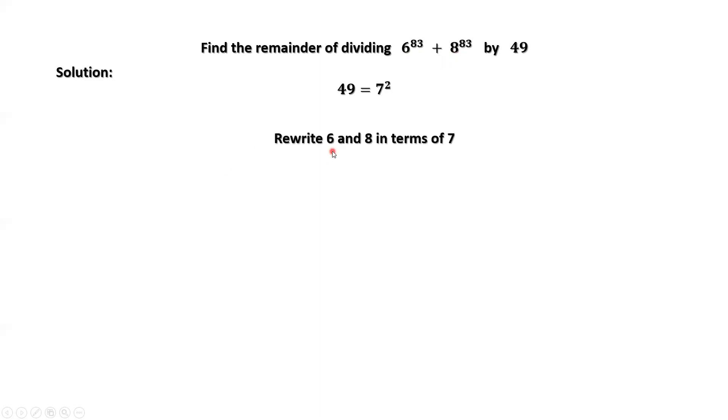We can rewrite 6 and 8 in terms of 7. 6 equals 7 minus 1. 8 equals 7 plus 1. For each term, we can apply the binomial formula. Here is the binomial formula.